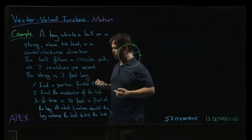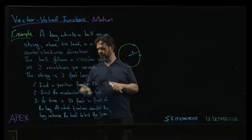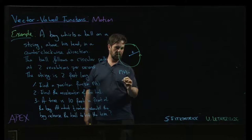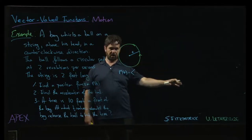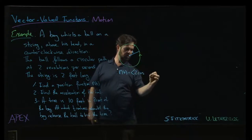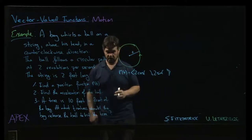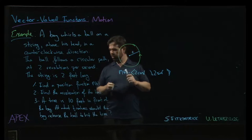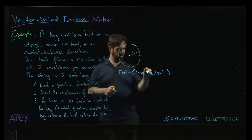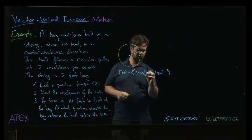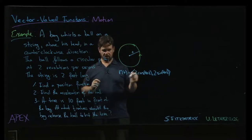The radius of the circle is 2 feet — we're working in feet and seconds — and the ball completes two revolutions per second. The first thing we want to do is find a position function r(t). For counterclockwise rotation in a circle we start with (cos t, sin t). We want radius 2, so it becomes (2cos, 2sin). For two revolutions per second, in one second we go around four pi, so the argument is 4πt. The position function is r(t) = (2cos(4πt), 2sin(4πt)).